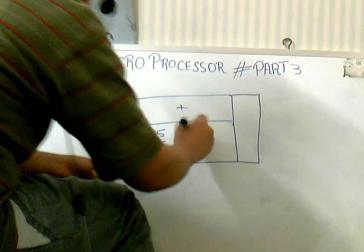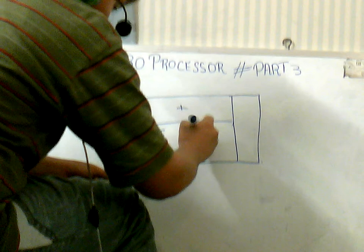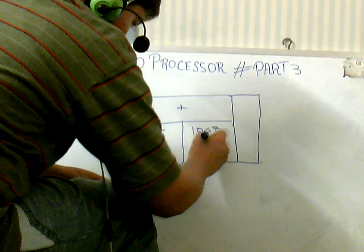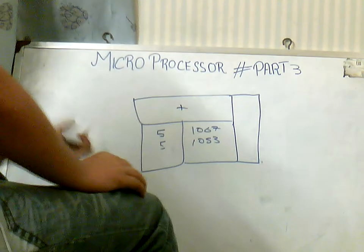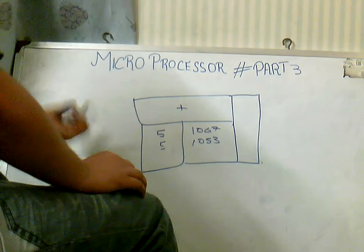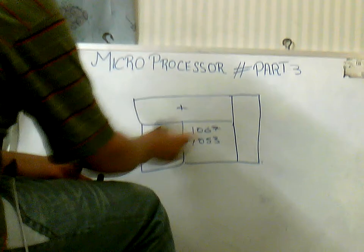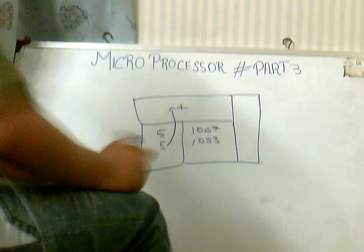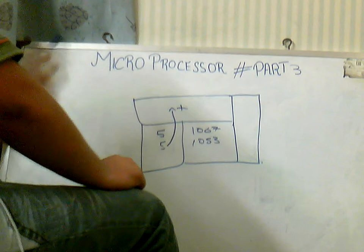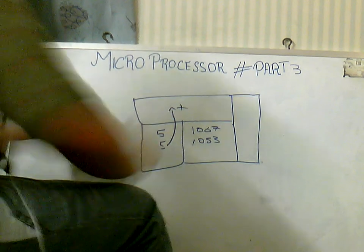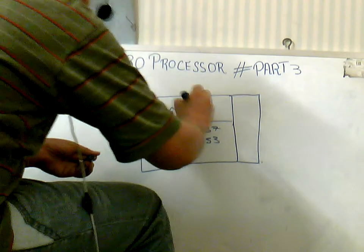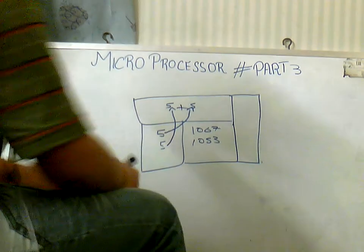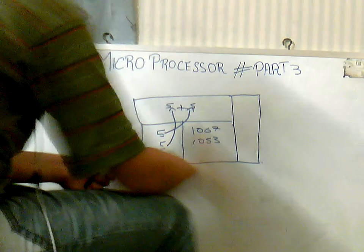To solve this problem, the address register is present. Every program word or data word is given a specific address. Let's give them the addresses 1067 and 1053. If the accumulator calls the five of address 1053, that five will go and assemble here, and then it calls the five of address 1067, so that five will assemble here. This is the purpose of the address register.